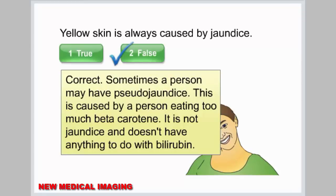Sometimes a person may have pseudo-jaundice. This is caused by a person eating too much beta-carotene. It is not jaundice and doesn't have anything to do with bilirubin.